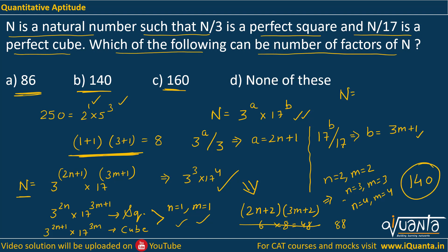With n = 4, m = 4, we'd have n = 3⁹ × 17¹³. But if you divide this by 3 you get 3⁸ × 17¹³, and since 17¹³ is not a perfect square, this does not satisfy the given condition. So n cannot simply be 3⁹ × 17¹³.